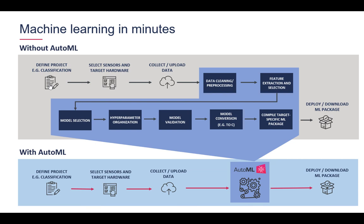Now that data collection is done, we go to the training interface and select the 100 instances of 'nothing' collected earlier, as well as the scratch and tap data we just collected, to start a new training. Here we have options including feature selection and hyperparameter optimization, but in the interest of time we'll skip those. At the bottom are the different algorithms we support — both deep learning and non-deep learning models including ANN, CNN, GBM, logistic regression, random forest, and XGBoost. We'll select the three non-deep learning models and start training. Here it is going through all the machine learning stages: cropping data, featurizing, et cetera.